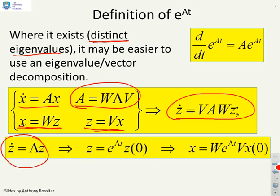And because lambda is diagonal, I can write an expression like this by inspection. z equals e to the lambda t z zero. Because it's diagonal, I can treat each component of lambda separately, and e to the lambda t becomes meaningful, and we'll show that on the next slide. And having solved for z, I can now solve for x using the expression I've got here, x equals Wz. So there we get x equals W e to the lambda t V x of zero.